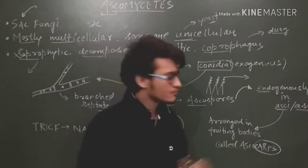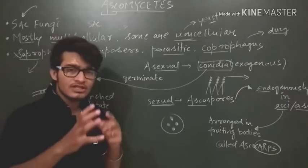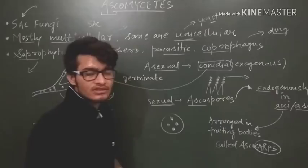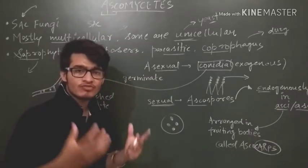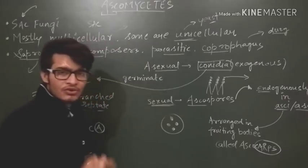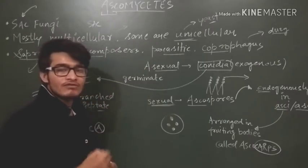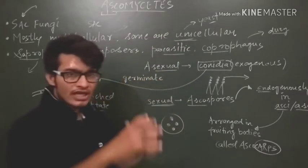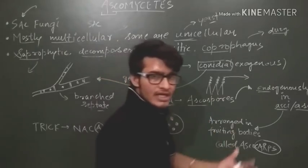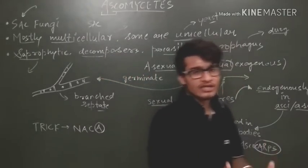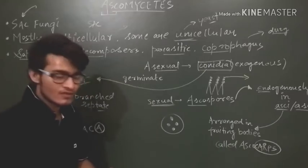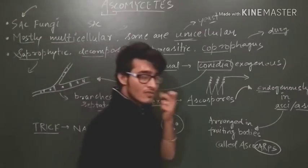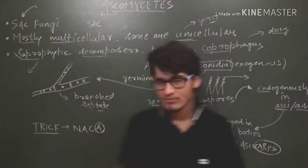The mycelium is going to be branched and septate so there is no coenocytic condition. The asexual reproduction is with the help of conidia which are formed exogenously, and the sexual reproduction is with some specific spores related to Ascomycetes that are known as ascospores which are formed endogenously in the ascus or sac. And those sac are arranged in a particular format known as ascocarp or the fruiting body. This is about Ascomycetes.